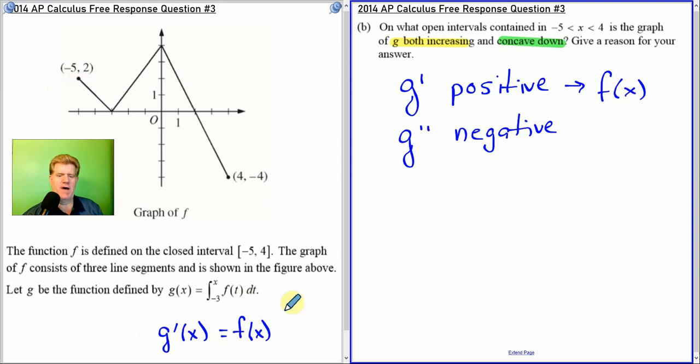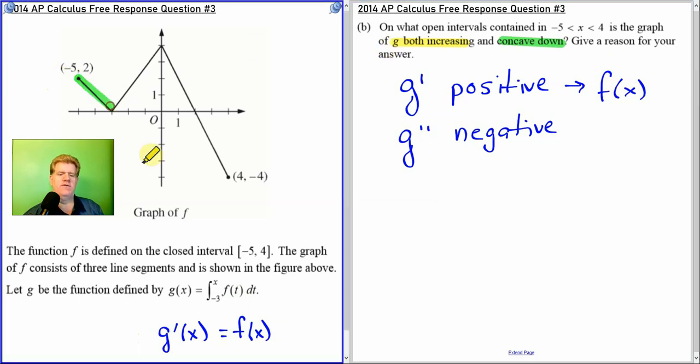All right, f is positive anytime it's above - let's just do a different color, keep the colors consistent. The first derivative will have a yellow. It's wherever it's above the axis. So everything from negative 5 to 2, g' is positive because f is positive. Okay, and it follows.